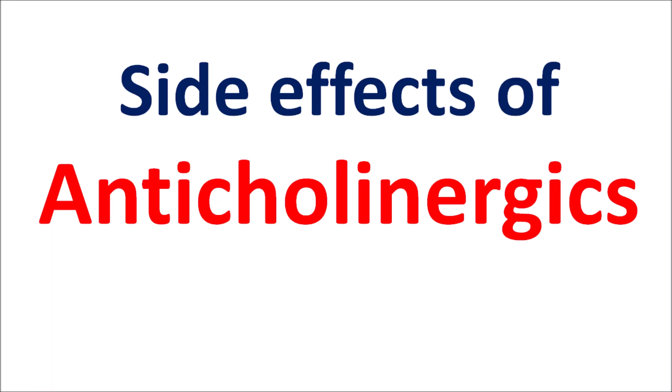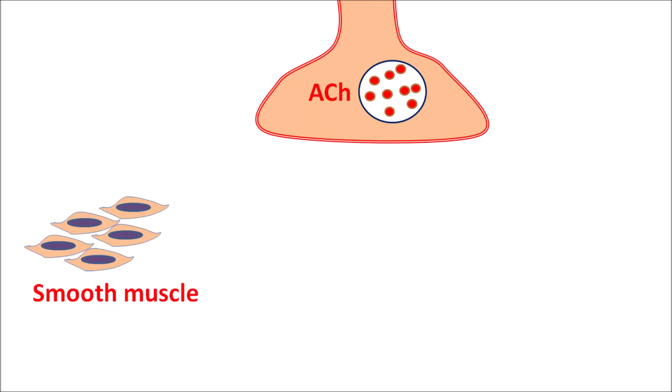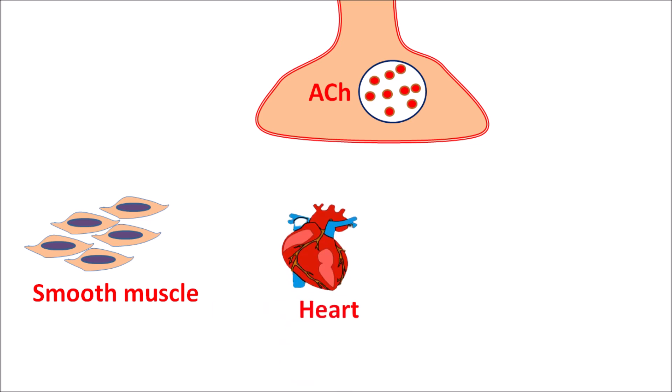Today in this video we are going to discuss the side effects of anticholinergics in an easy way. Acetylcholine can be released from neurons and act on different targets: smooth muscle, the heart, exocrine glands, blood vessels, and even the central nervous system.